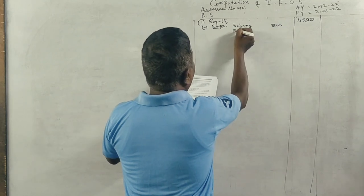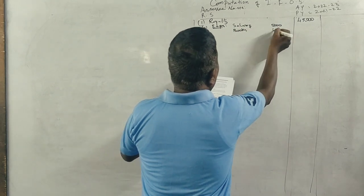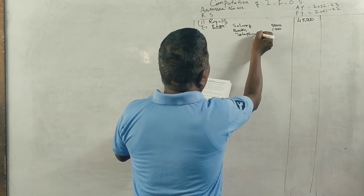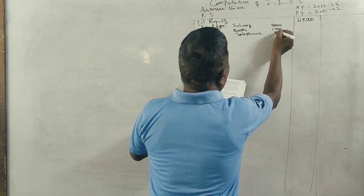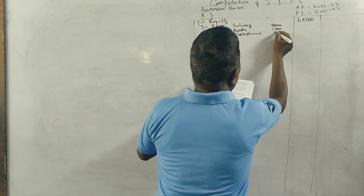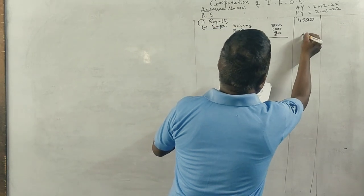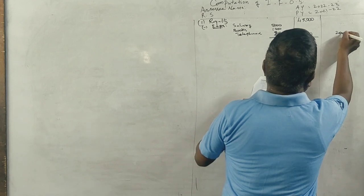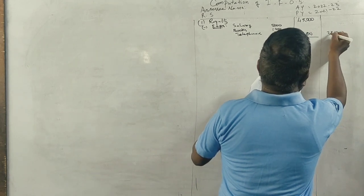Books Rs. 1,000, telephone expenses Rs. 800, total deductions Rs. 6,800. If you deduct it, you get Rs. 38,200.